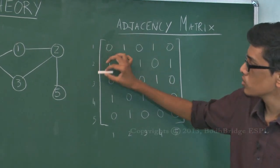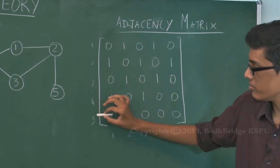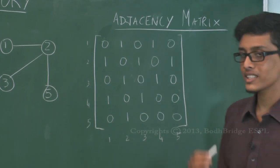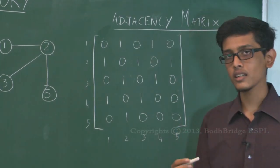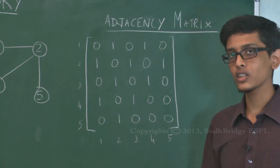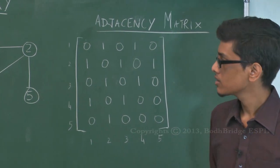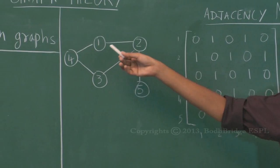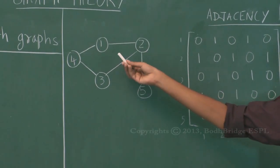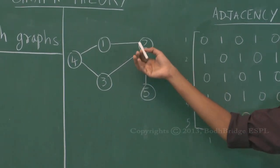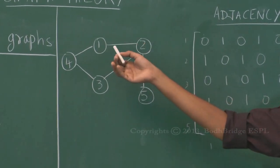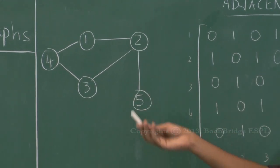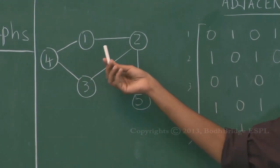In an adjacency matrix, the rows and columns are represented by vertices — vertex 1, 2, 3, 4, 5 on both axes. The basic assumption is that a vertex is not adjacent to itself, so vertex 1 is not adjacent to itself. If vertex A is adjacent to vertex B, then M(A,B) will be 1 and M(B,A) will also be 1 — so it's a symmetric relationship.